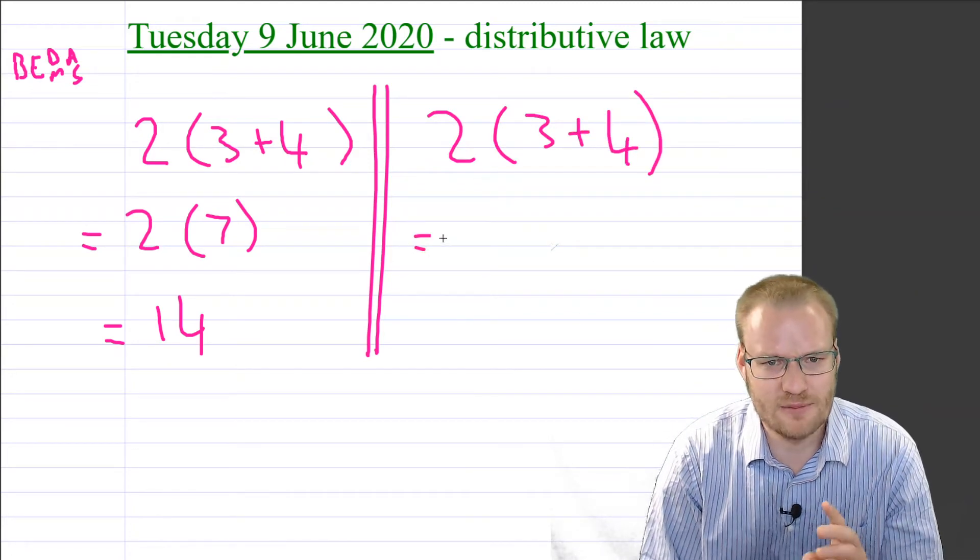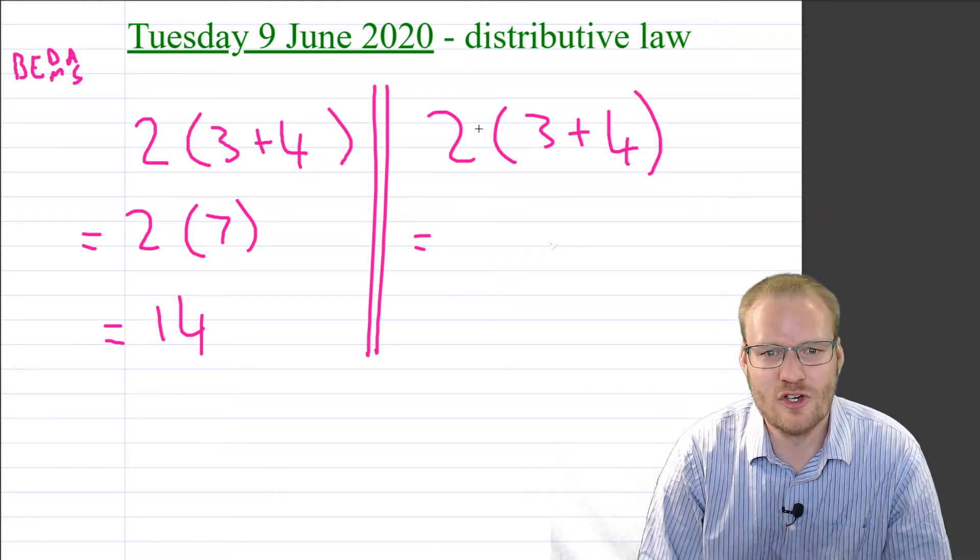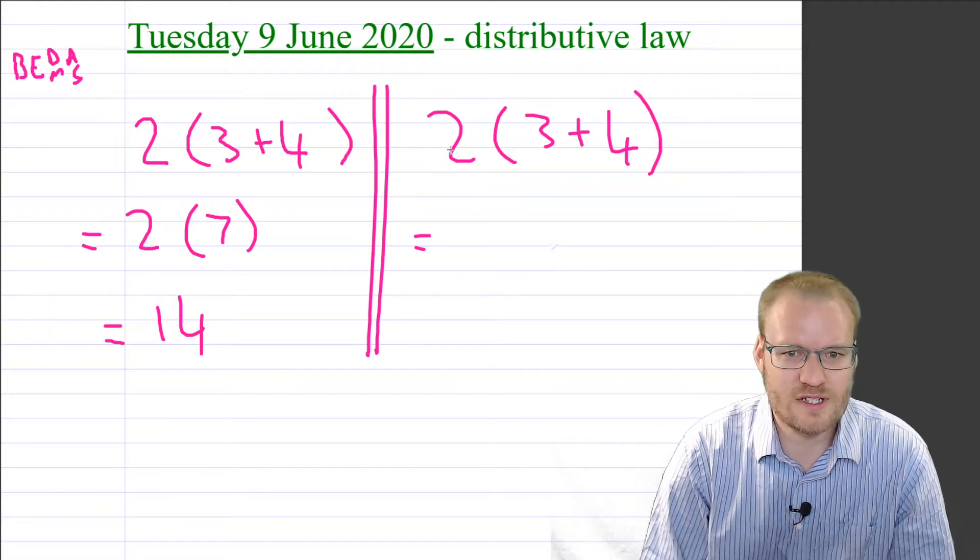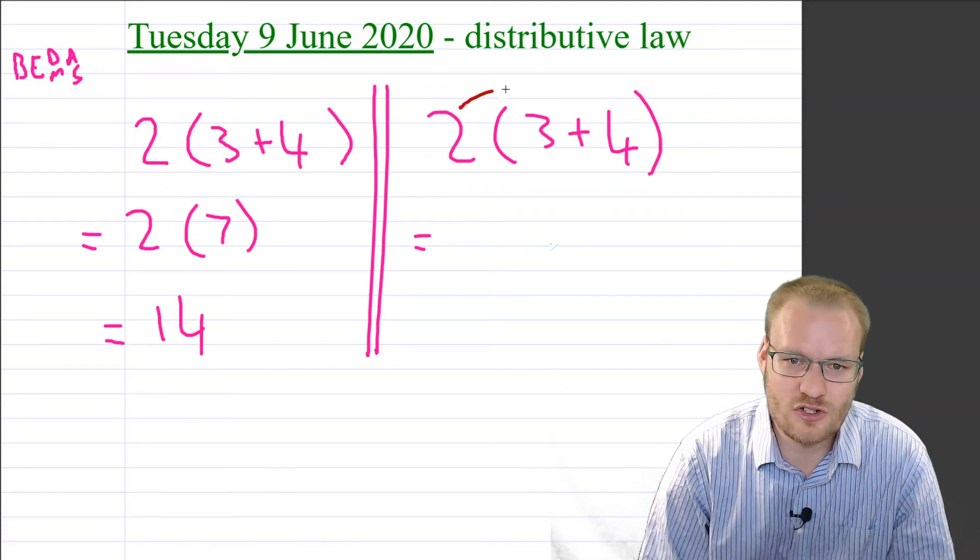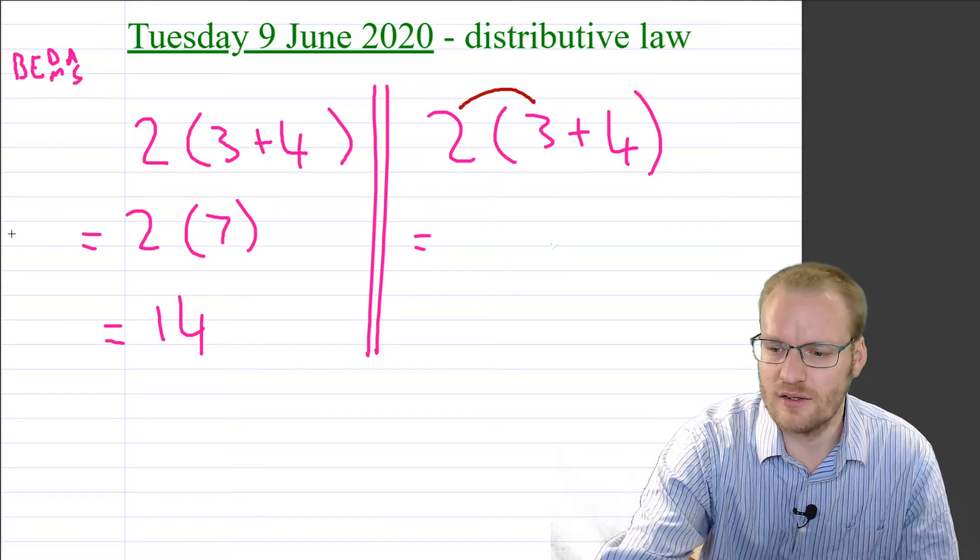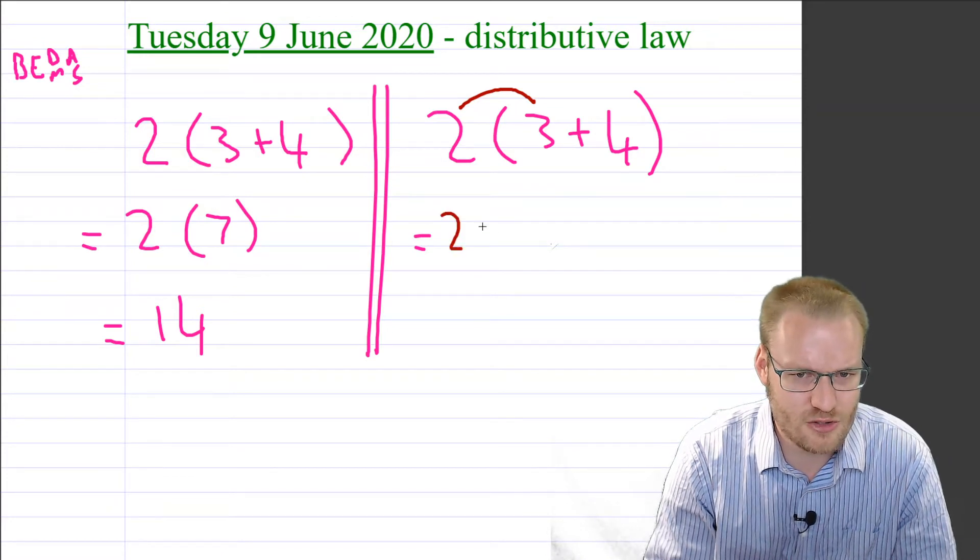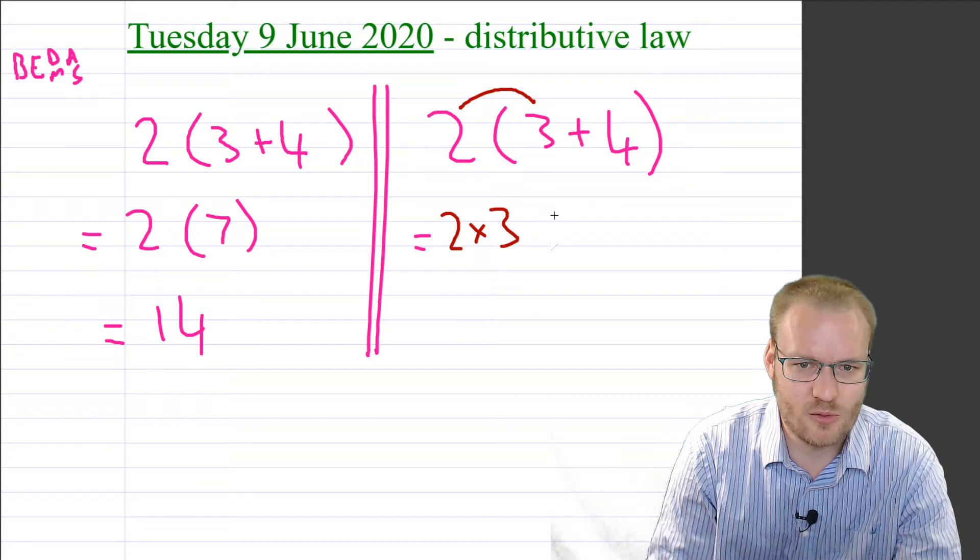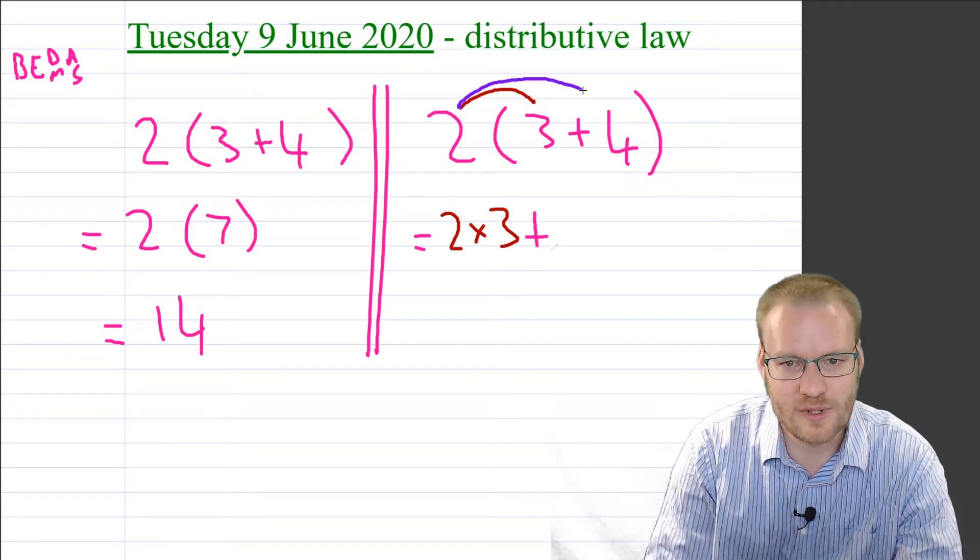And this time, I'm going to say, instead of doing the brackets first, you can what's called distribute the 2. So you can say, well this is the same as 2 times each of those. So we've got 2 times 3. Well, that gives us 6, I think. So I'm going to write that step out to show what I mean. This is 2 times 3. And then we can add the 2 multiplied by the 4. So 2 times 4.